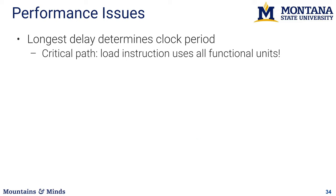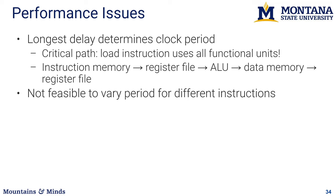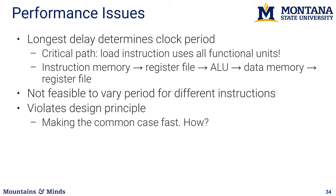Load instructions are not too frequent, but this becomes an issue. A fast instruction like an arithmetic instruction doesn't need to use memory and could be faster. However, the data path must be designed to cater to all instruction types — we don't want separate data paths, so we can't vary the execution period for different instructions. This violates the principle of making the common case fast, because arithmetic operations on registers are much more common than loads but are slowed down to match load timing.